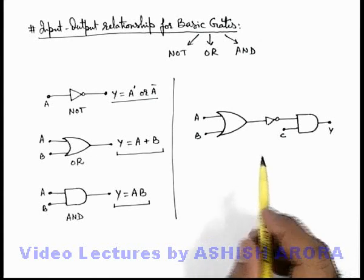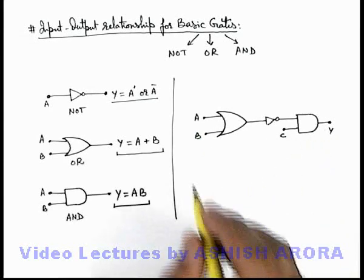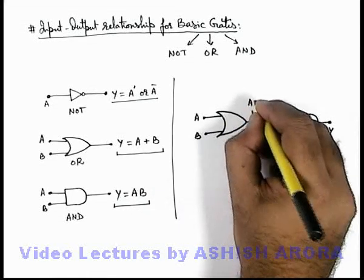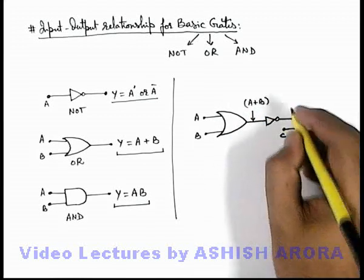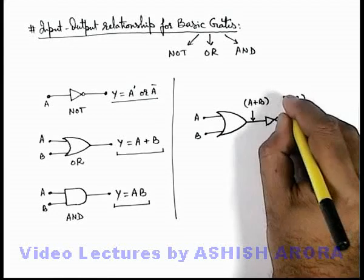And we wish to relate the inputs A, B, and C to the output. In this situation we can see this OR gate will give an output which will be A plus B. And when A plus B signal will pass through the NOT gate, this will be inverted so this can be written as (A plus B) prime.